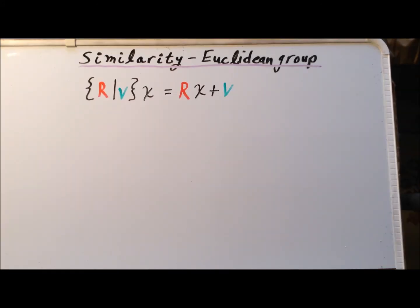We recall that a Euclidean transformation takes a vector x, rotates it using this 3×3 matrix R, and then shifts it by another vector V, where this is the so-called Seitz notation. If you're not familiar with that notation, you can see it explained more thoroughly in this video here.